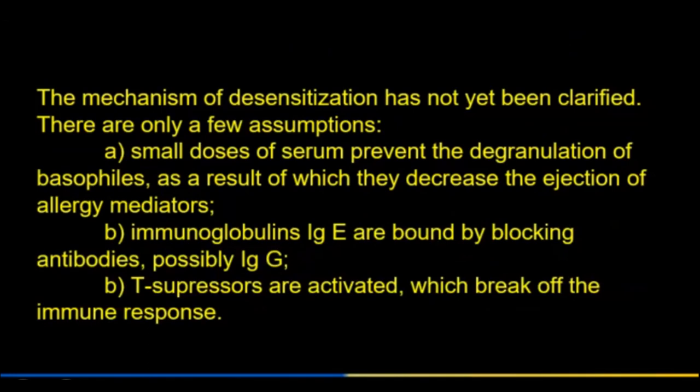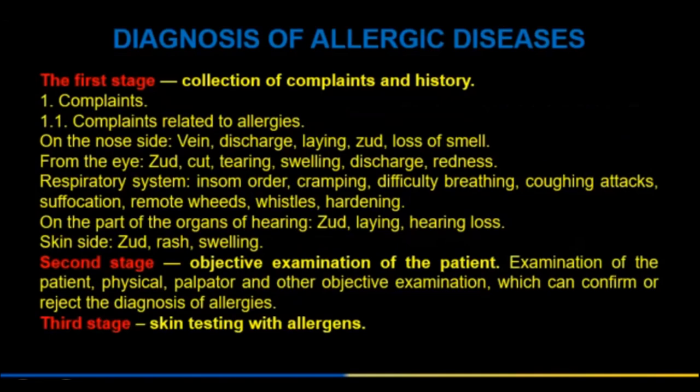The mechanism of desensitization has not yet been fully clarified. Small doses of serum prevent degranulation of basophils, decreasing release of allergy mediators. Immunoglobulin E is bound by blocking antibodies (possibly immunoglobulin G), and T-suppressors are activated, breaking off the immune response.